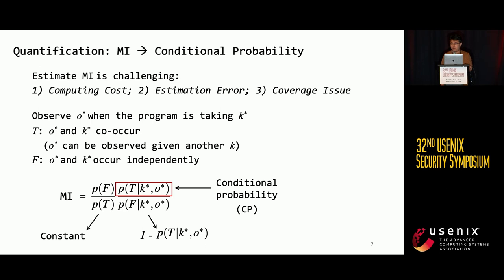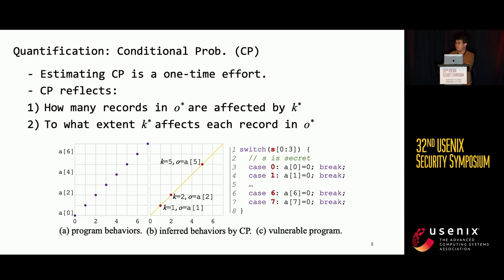The sampling must cover all leakage sites to give a precise estimation of mutual information. To alleviate these problems, we find that with some transformations, the mutual information is only decided by a conditional probability. The conditional probability describes, for secret K* and its derived side-channel observation O*, how likely they could occur in practice. Note that O* can be observed given another different K, so the probability of their co-occurrence is not always 100%.